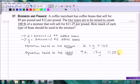And so if we take the value of the $9 coffee beans and add it to the value of the $12 coffee beans, that should equal the value of the mixture. And I can simplify this second equation just a little bit.